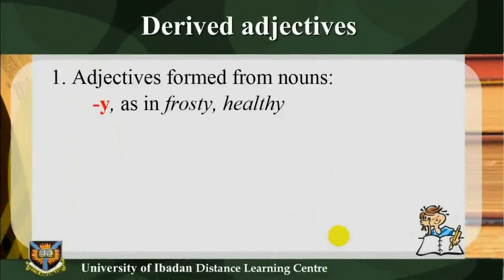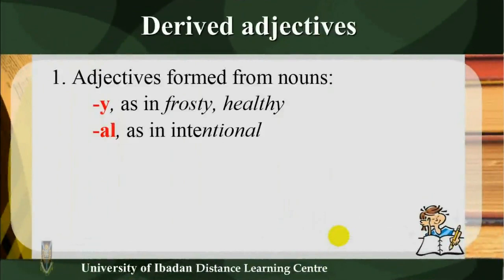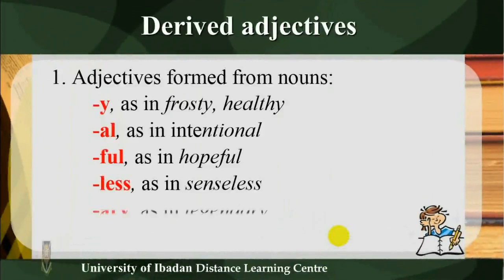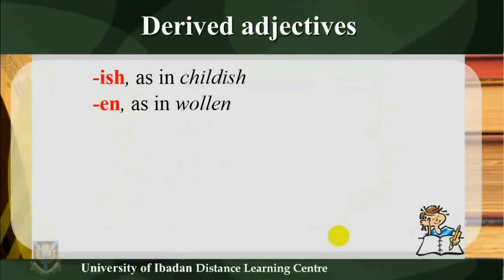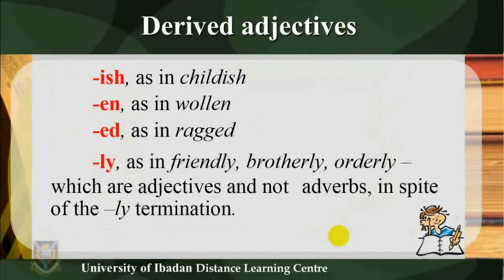Derived adjectives — 1) Adjectives formed from nouns. Suffixes include: -y (as in 'frosty', 'healthy'), -al (as in 'intentional'), -ful (as in 'hopeful'), -less (as in 'senseless'), -ary (as in 'legendary'), -ic (as in 'democratic'), -ish (as in 'childish'), -en (as in 'woollen'), -ed (as in 'ragged'), -ly (as in 'friendly', 'broadly', 'orderly' — which are adjectives and not adverbs, in spite of the -ly termination).